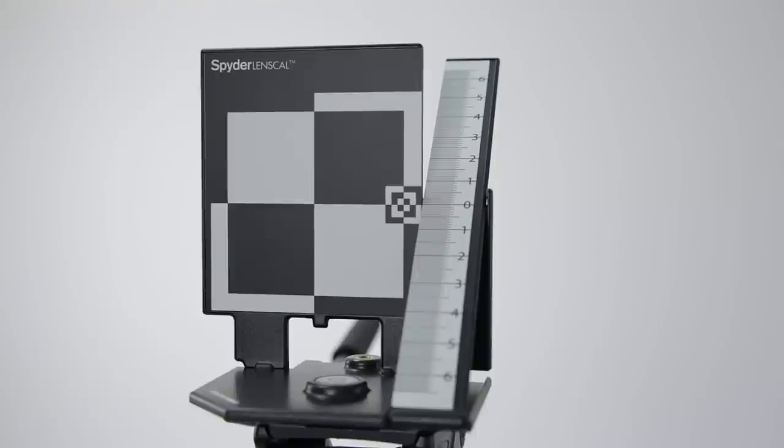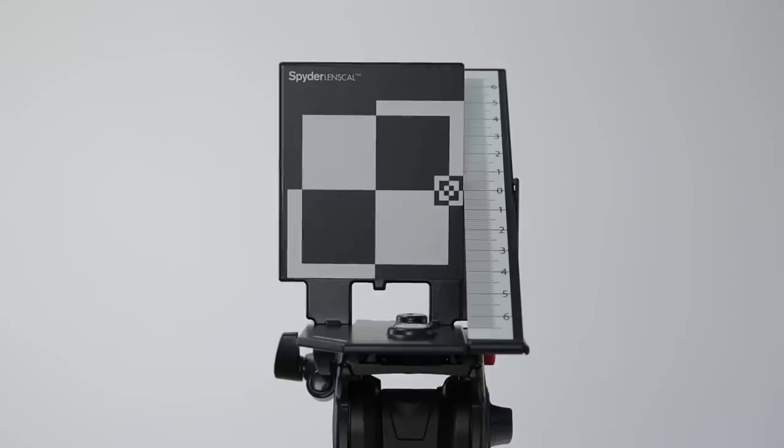All right, let's first talk about the Spider Lens Cal. If you spend a lot of money on your camera and your lenses, it makes sense to get a calibration device to check the calibration of your lenses. Now I've checked three or four of my lenses now, and some of them have been closer, and some have been way off, and I was really surprised by that.